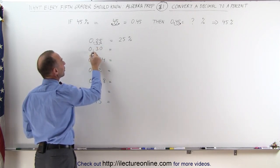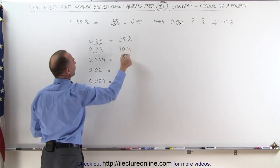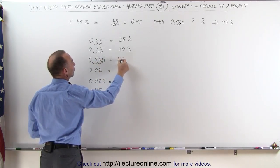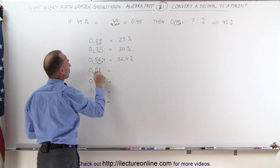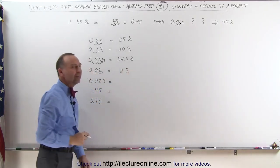Here, notice that we don't have an extra number here. We could put a 0 there, move the decimal place over twice, and we get 30%. Here, we move the decimal place over twice, and we get 56.4%. And here, we move the decimal place over twice, and we get 2%. That's how easy this is.